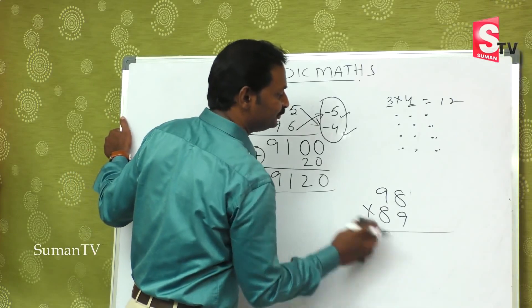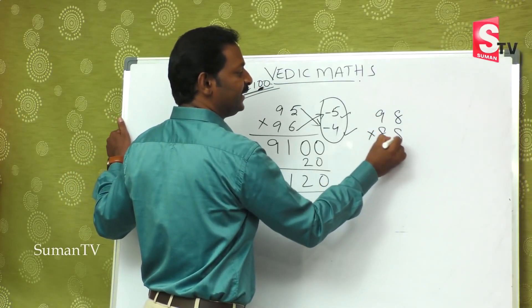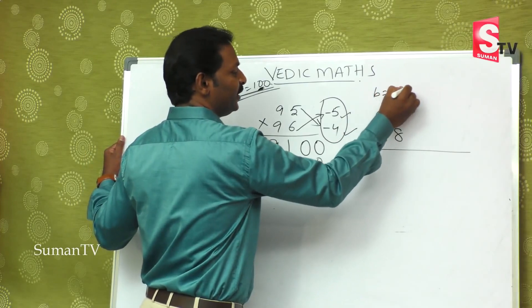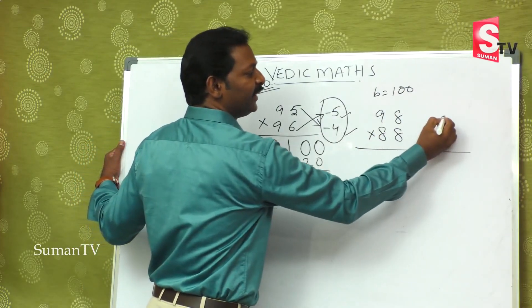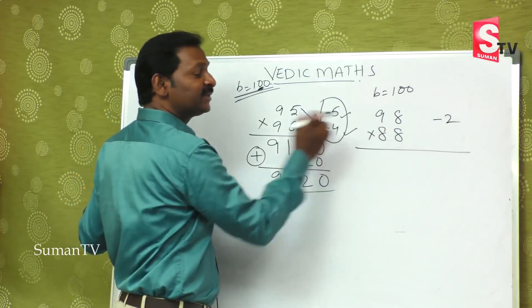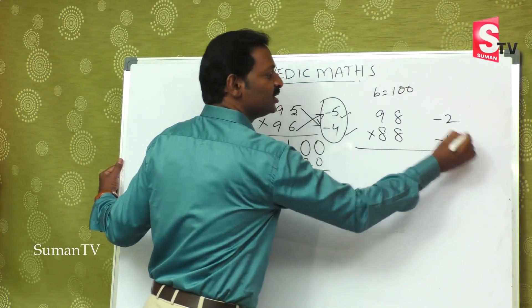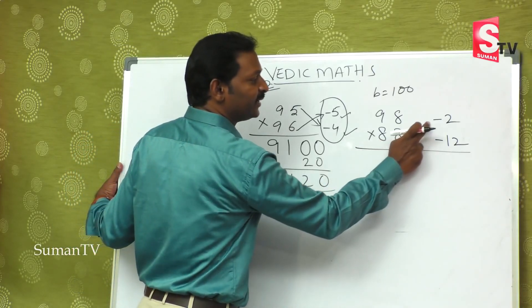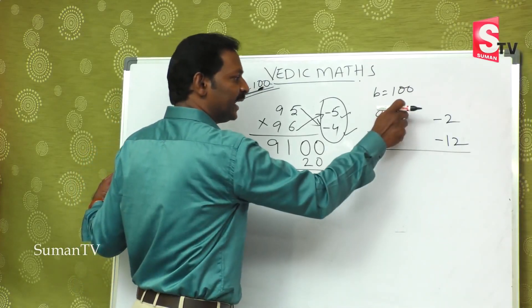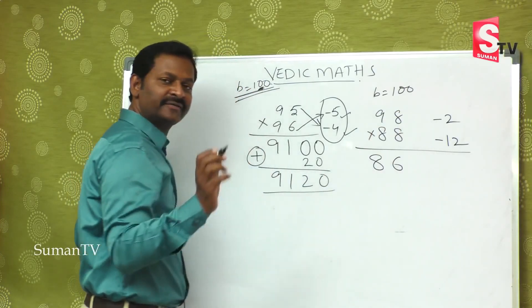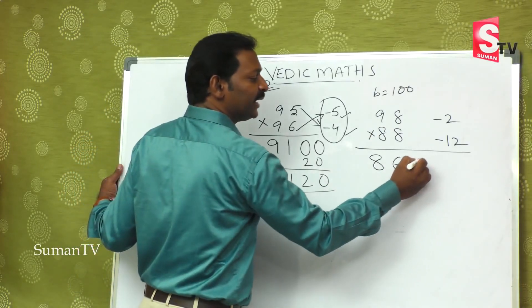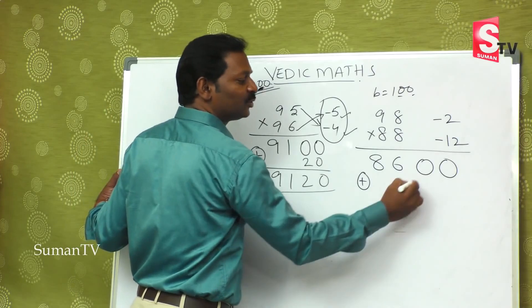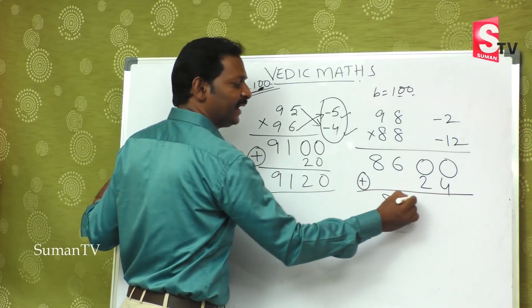Coming to this one — 98 multiplied by 88. The base value is 100, no doubt. 98 is less than 100 by 2, so minus 2. 88 is less than 100 by 12 — because 88 plus 12 equals 100 — so minus 12. Cross-subtract: 88 minus 2 is 86, or 98 minus 12 is also 86 — first part of the answer is done. Then minus into minus is plus: 2 times 12 is 24. Final answer: 8624.